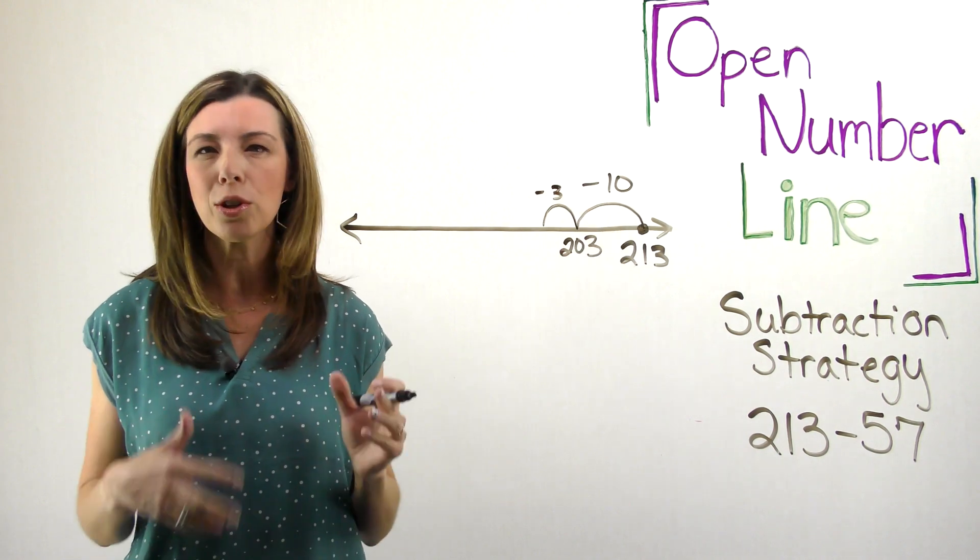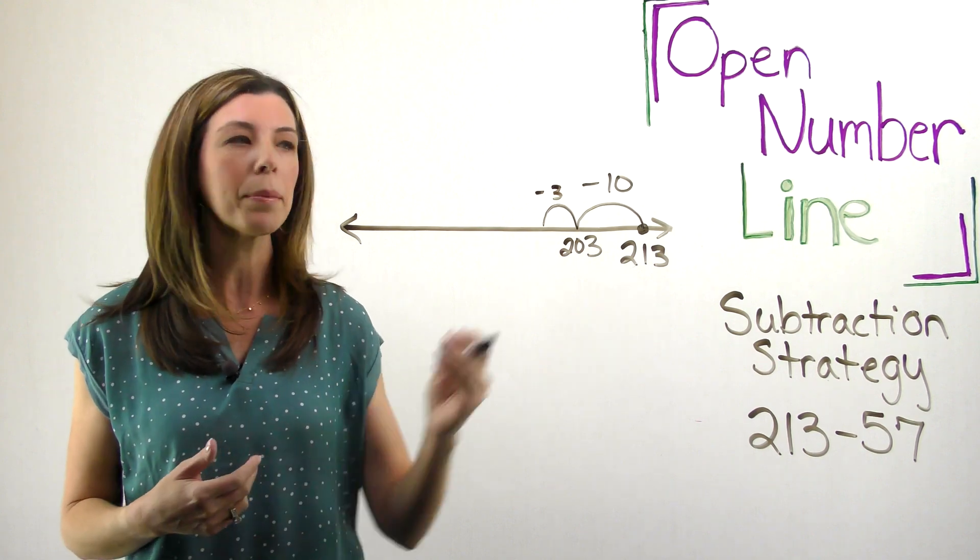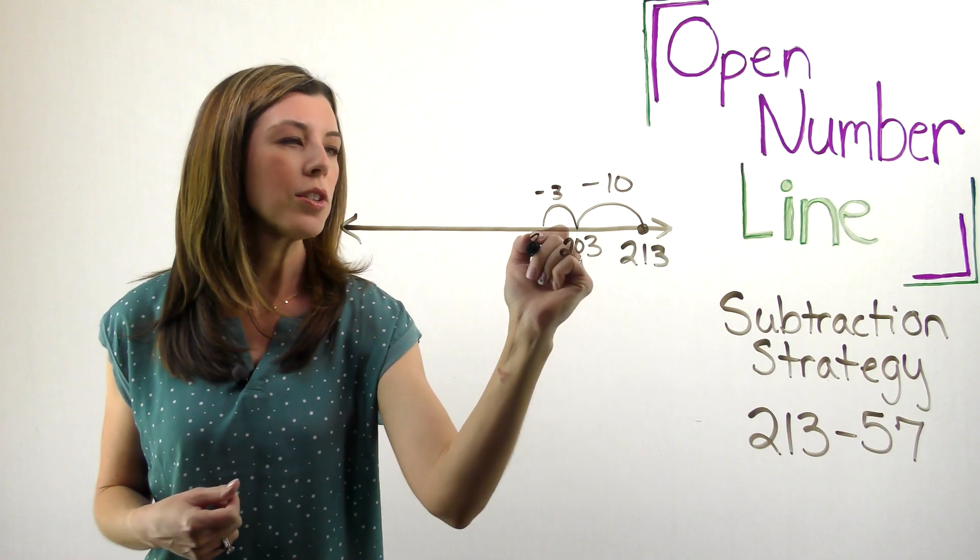Notice that my hops are not really proportionate. That's okay. I'm all right with that. The key is that I'm sticking to my number line and I'm thinking about going in this direction. Okay. So now I'm at 200.